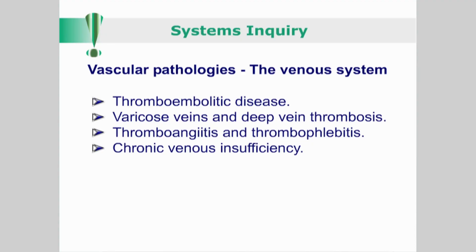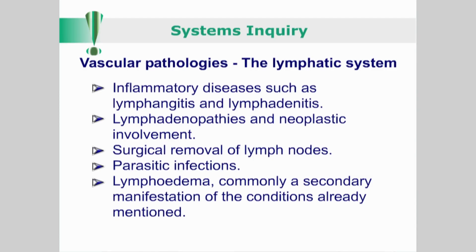For the venous system, consider thromboembolytic disease, varicose veins and deep vein thrombosis, thromboangitis and thrombophlebitis and chronic venous insufficiency. Conditions affecting the lymphatic system include inflammatory disease such as lymphangitis and lymphadenitis, lymphadenopathies and neoplastic involvement, surgical removal of lymph nodes, parasitic infections and lymphedema, commonly as secondary manifestations of the conditions already mentioned.